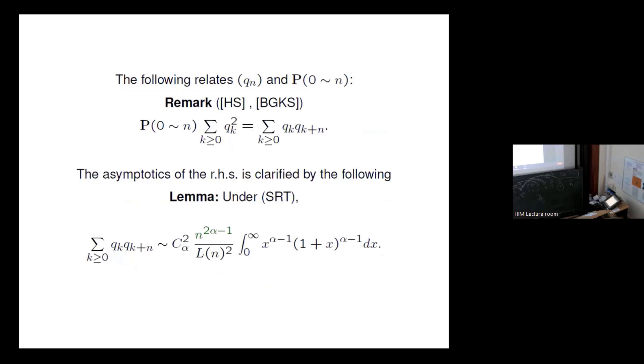Okay, the following relates the renewal function and this asymptotic property. And that's, again, an easy remark, which is based on a first meeting decomposition, if you like, of two ancestral lineages. The probability of being related times, it's an equality of expected values. You ask what's the expectation of two independent lineages meeting? And that's this renewal equation, if you like.